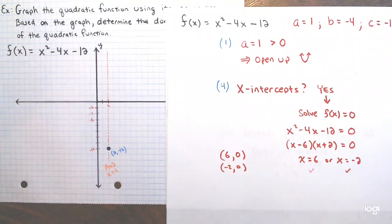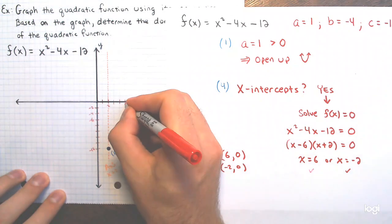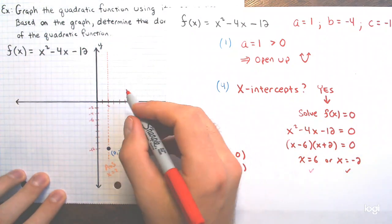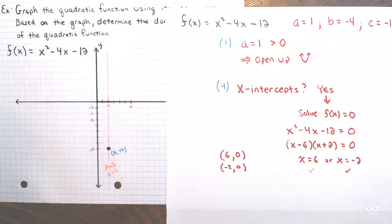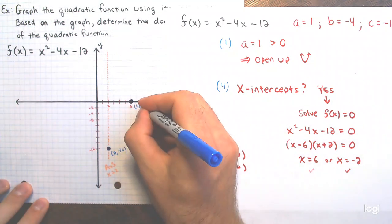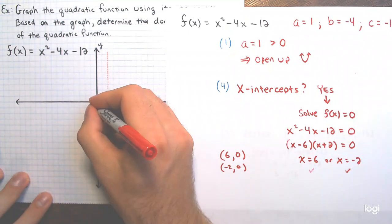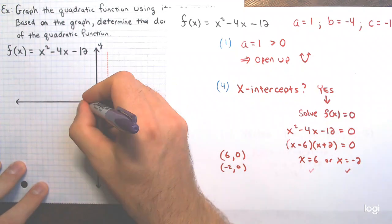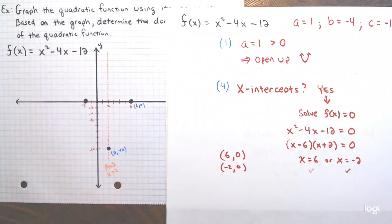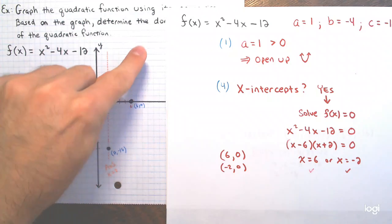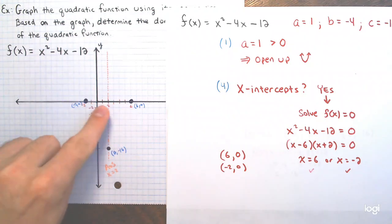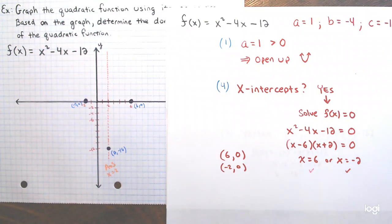So the x-intercepts are (6, 0) and (negative 2, 0). I plot and label both. With points on either side of the axis of symmetry and the vertex, I have enough for a rough sketch. The y-intercept is also easy: plug in x equals zero to get zero comma negative 12, since c equals negative 12.